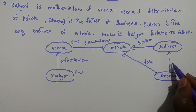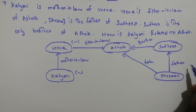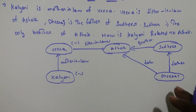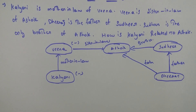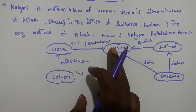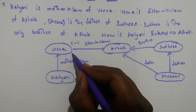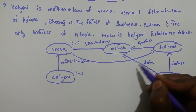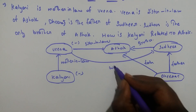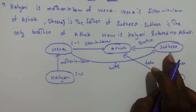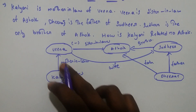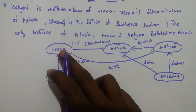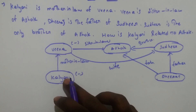Ashok and Sudhir are both brothers, and Dheeraj is their father. Now, if Veena is the sister-in-law of Ashok, then Veena may be the wife of Sudhir. And Kalyani is the mother-in-law of Veena.